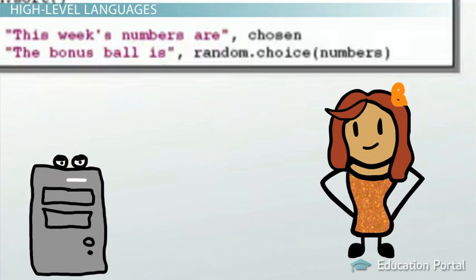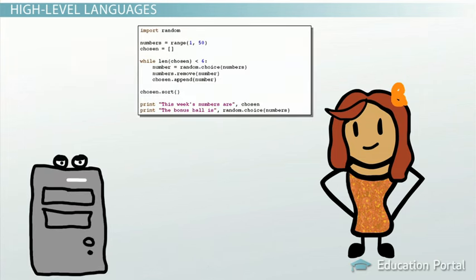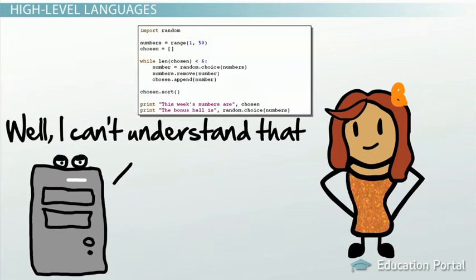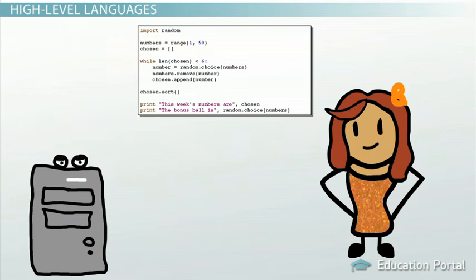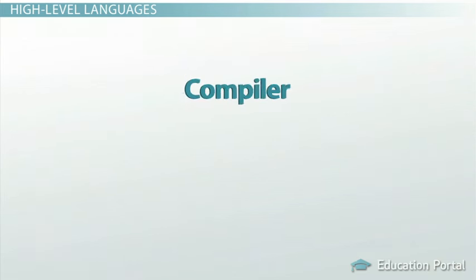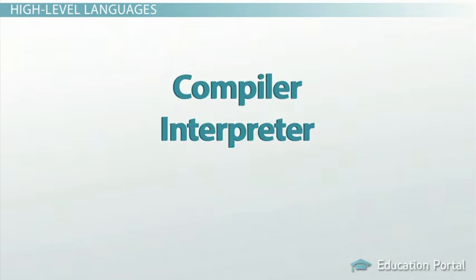A high-level language cannot be understood directly by a computer, and it needs to be translated into machine code. There are two ways to do this, related to how the program is executed. A high-level language can be compiled or interpreted.